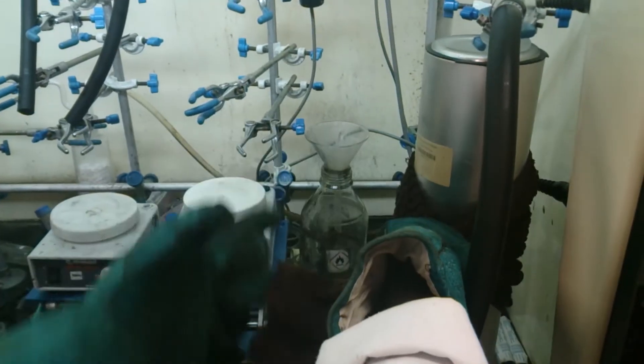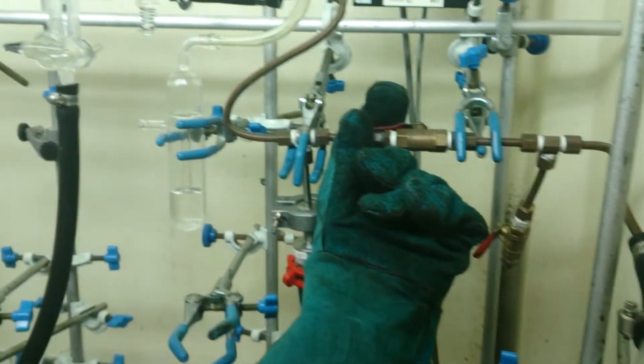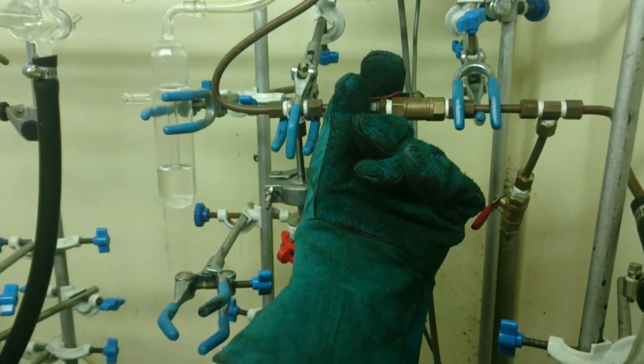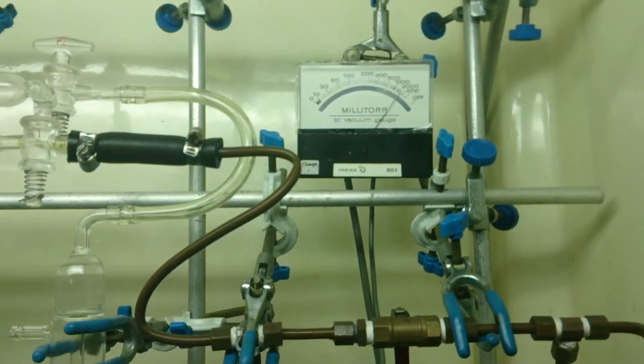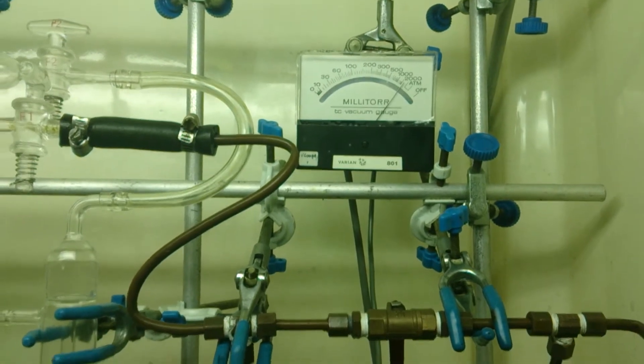So after this is done, we firstly need to close the Schlenk line by this Schlenk line vent. Now as you can see the vacuum has gone down because we have closed the Schlenk line. And now we need to close the vacuum gauge and the pump.